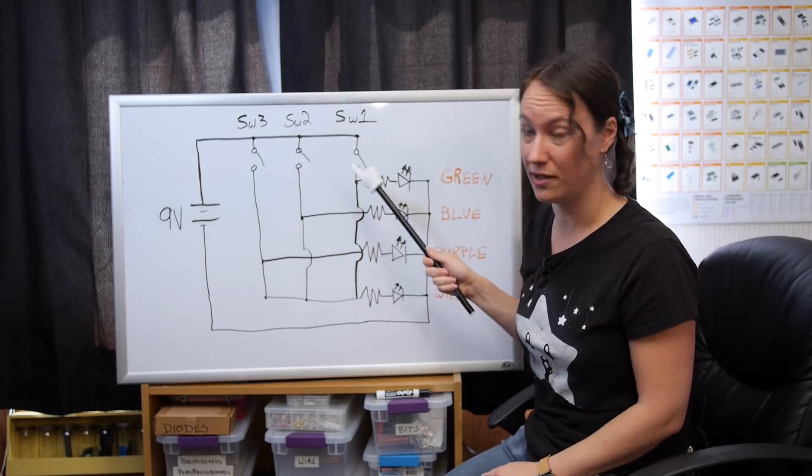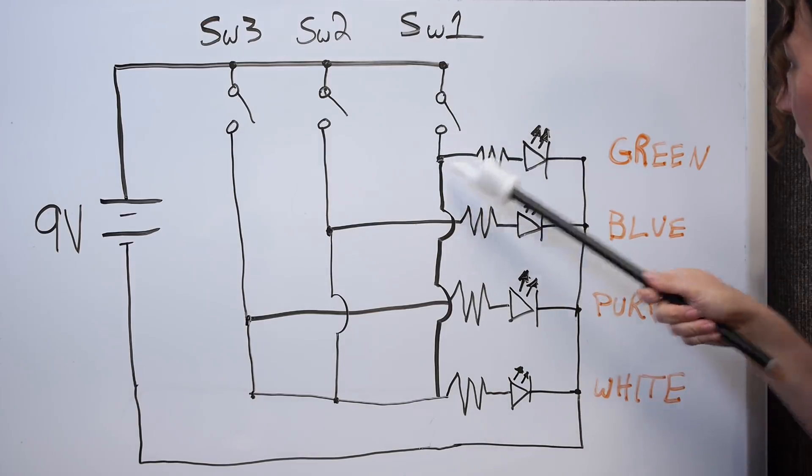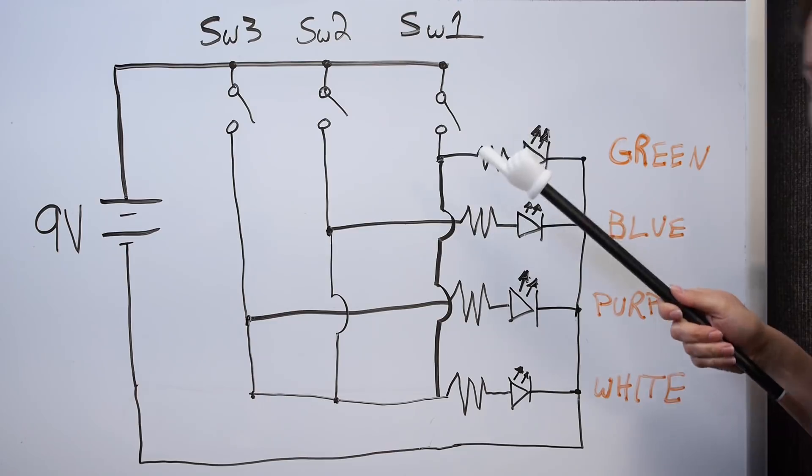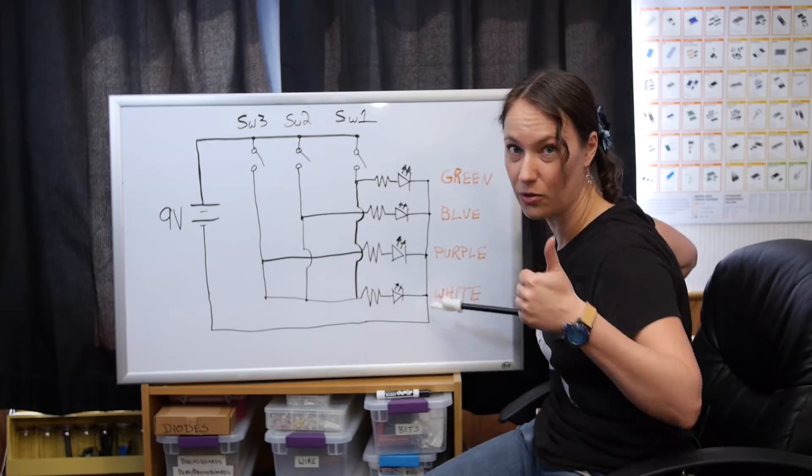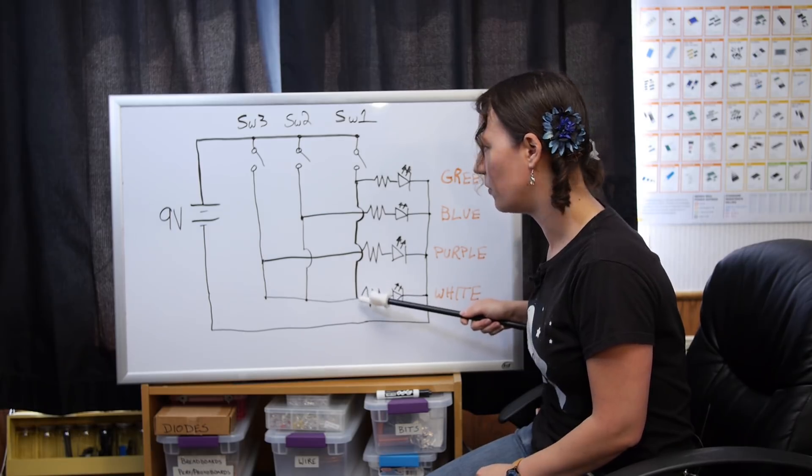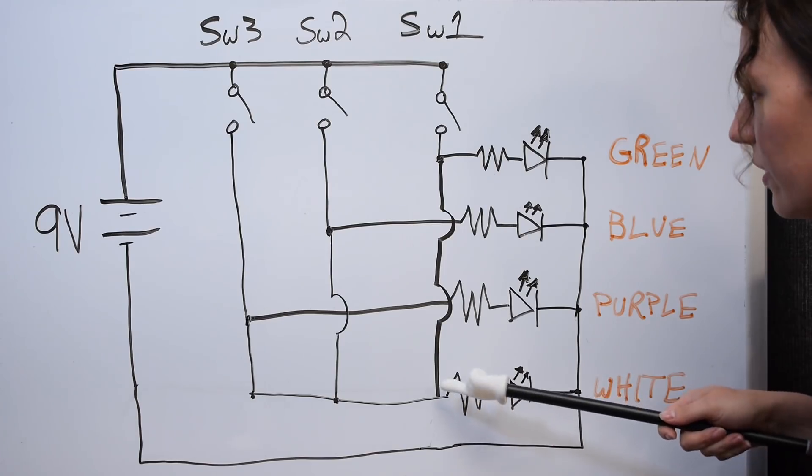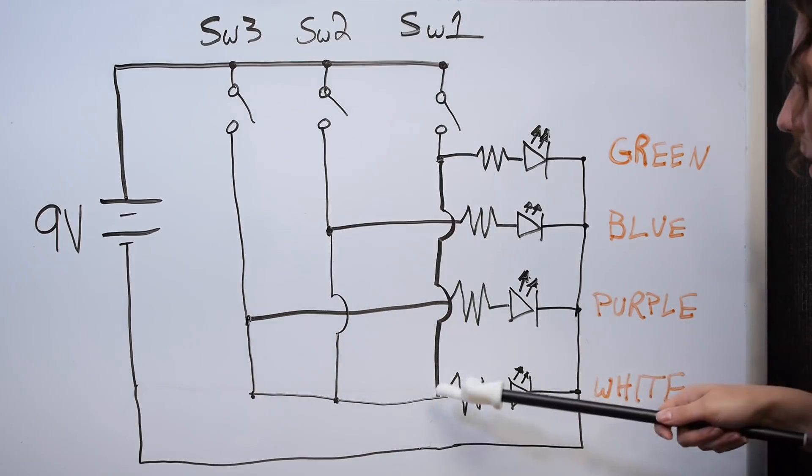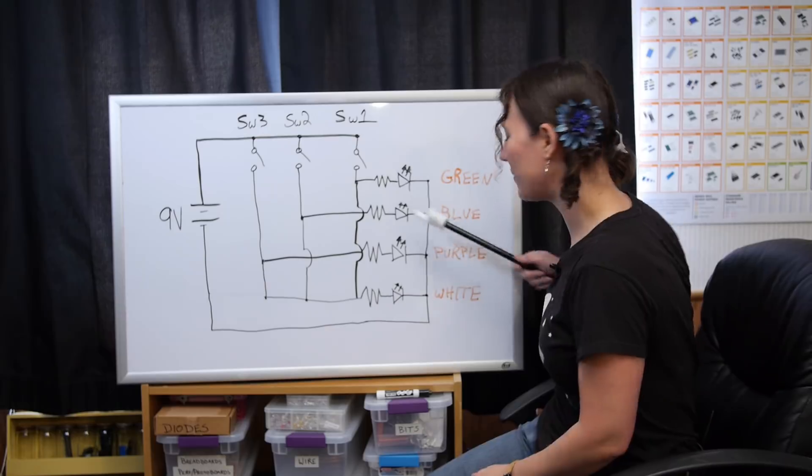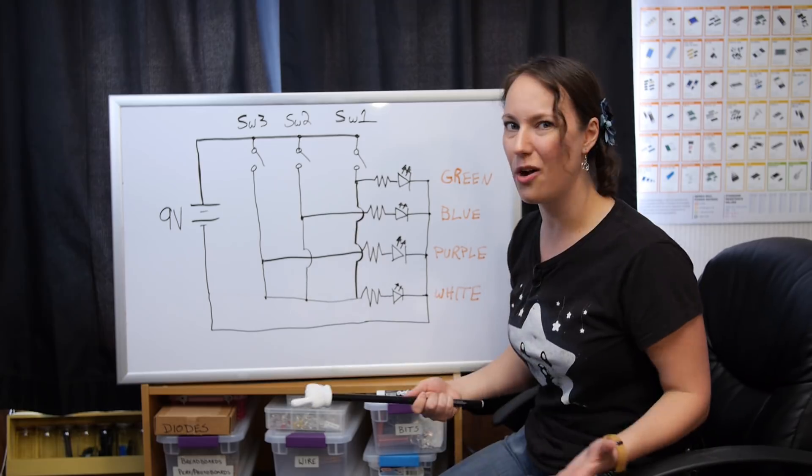We turn on switch one. Switch one goes on, goes over to our green LED. Cool. Comes on down, goes to our white LED. Cool. But uh-oh, we're now connected. So it goes back this way and it's connected here. And it turns on our purple LED too. And it goes back this way and it can turn on our blue LED. We don't want that.